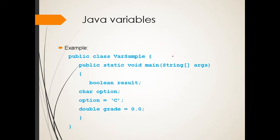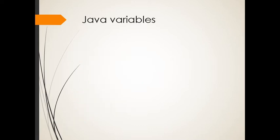This is a good example of a Java variable. We have VarSample, this is our class name. Then our main or dashboard. We use data type boolean with literal name result. We also have char option with value C, capital letter C. Then double grade equals 0.0. And don't forget to include the double closing curly braces.